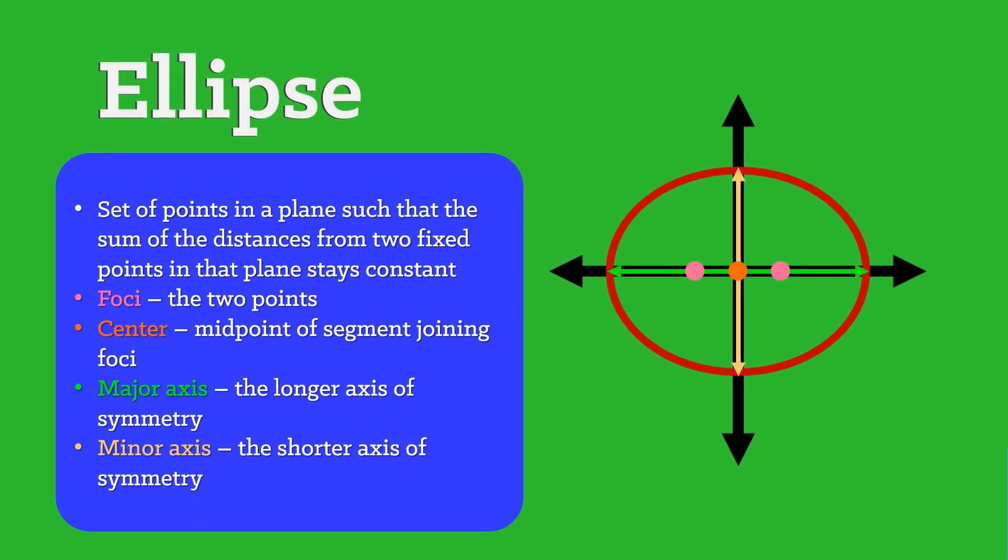Next is ellipse. It is a set of points in a plane such that the sum of the distances from two fixed points in that plane stays constant. It contains parts like the foci, center, major axis, and the minor axis.